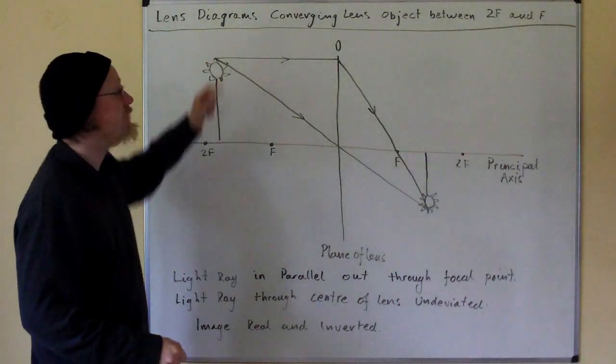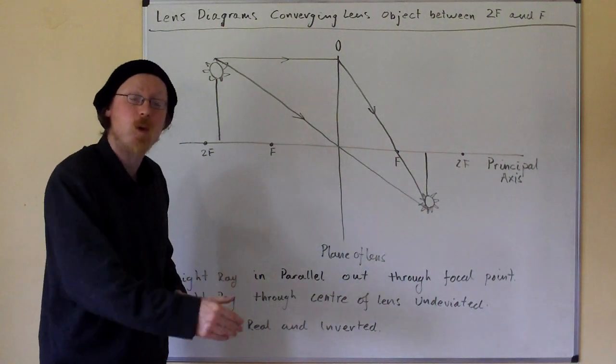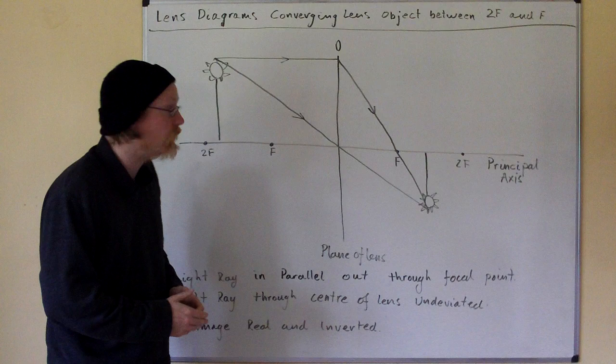Hi. Lens diagrams. Converging lens, object between twice the focal point and the focal point.